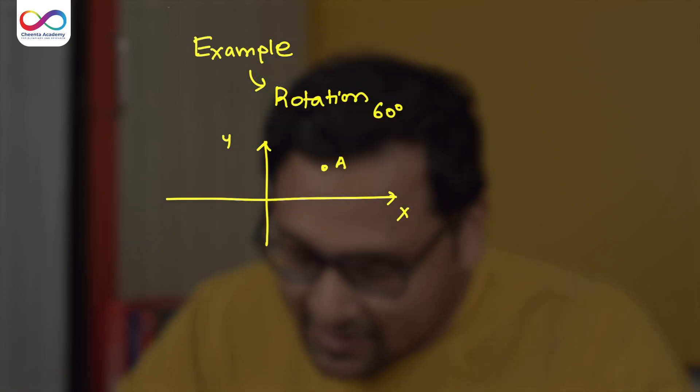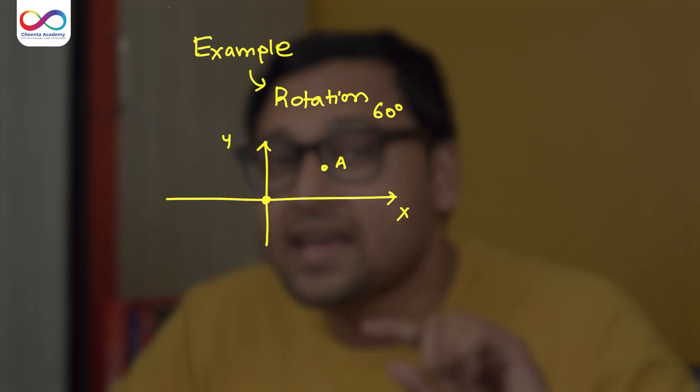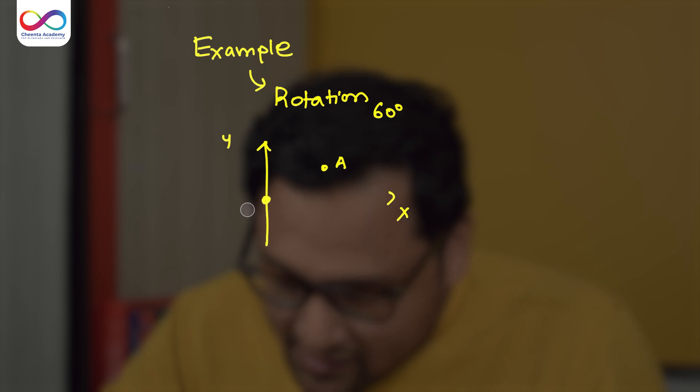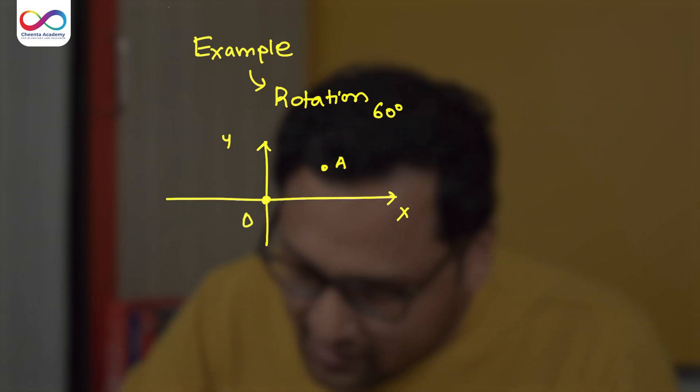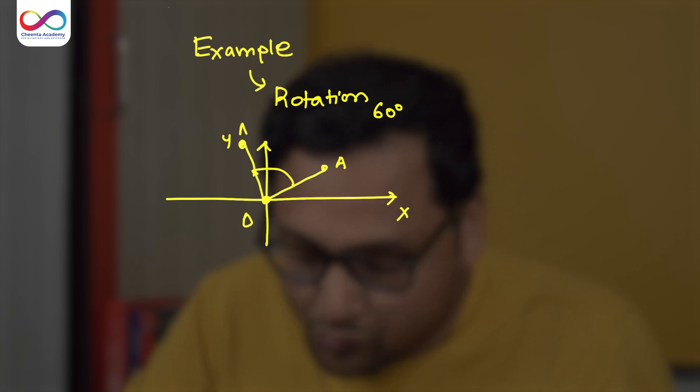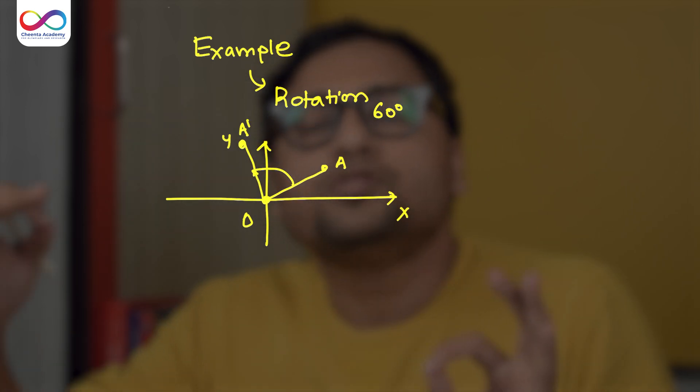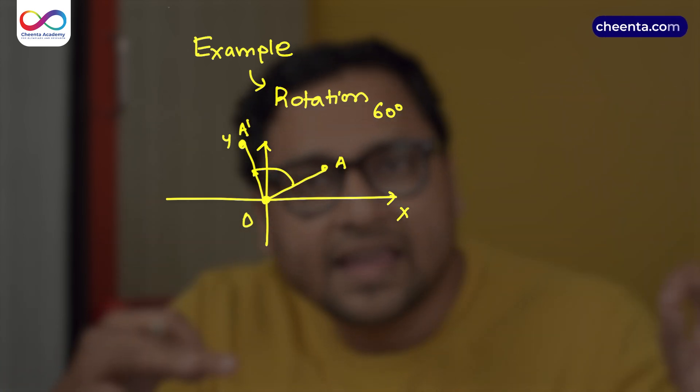If I apply that, I have to say rotation about what point. If I don't say it, it means rotation is about origin. So simply speaking, I take the origin. I take OA. I rotate it by 60 degree, and this is the output point. The input is A, the output is A prime.